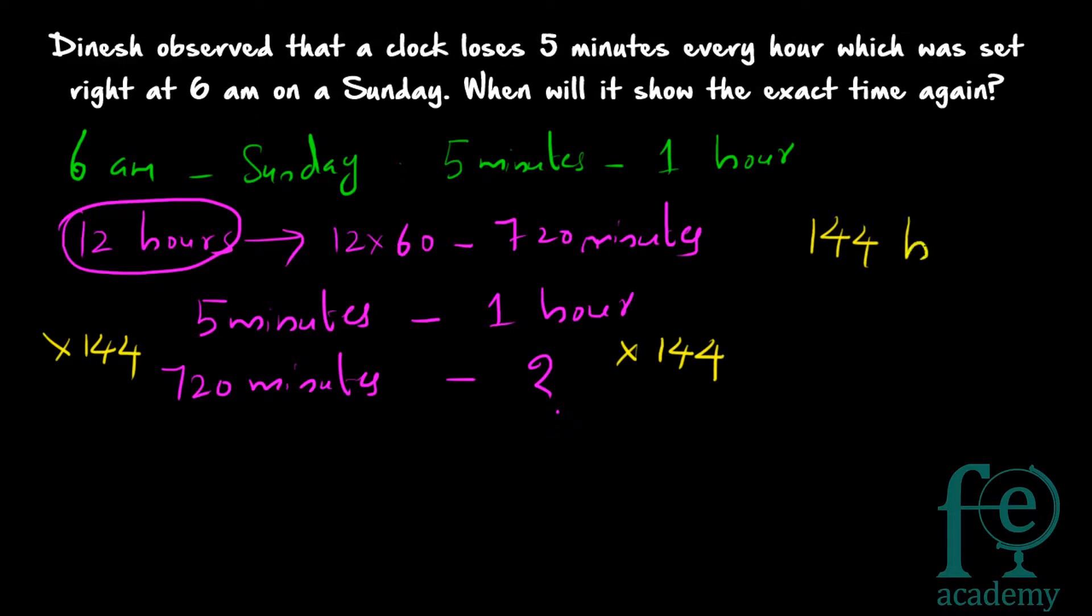So, after 144 hours, the clock will be showing right time. So, 144 hours means how many days? 144 divided by 24 which gives you 6 days.